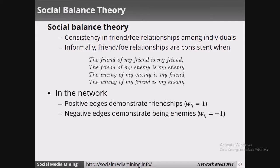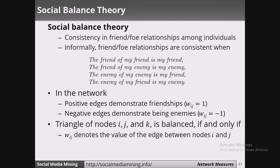These relationships can be balanced or unbalanced. In a network, a positive edge demonstrating friendship is represented as W_IJ = 1, and a negative edge demonstrating enmity is represented as W_IJ = -1. For a triangle of nodes I, J, K, the triangle is balanced if and only if the product W_IJ × W_JK × W_KI is greater than 0, meaning the result should be positive.